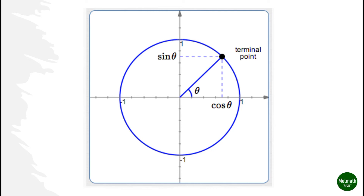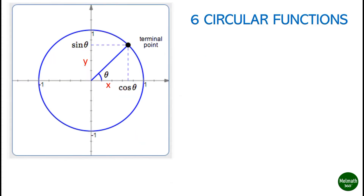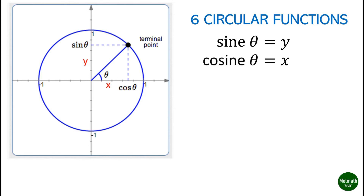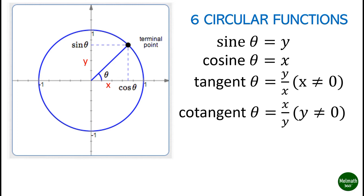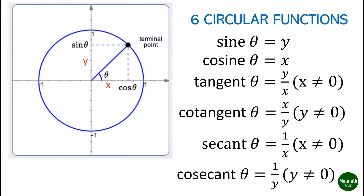Let us use the definition of the trigonometric functions of an angle in standard position. Given the coordinates of its terminal point on the unit circle, let P(θ) = (x, y) be the coordinates of the terminal point of theta on the unit circle. We define the six circular functions of theta as follows: sine θ = y, cosine θ = x, tangent θ = y/x (x ≠ 0), cotangent θ = x/y, secant θ = 1/x, and cosecant θ = 1/y.